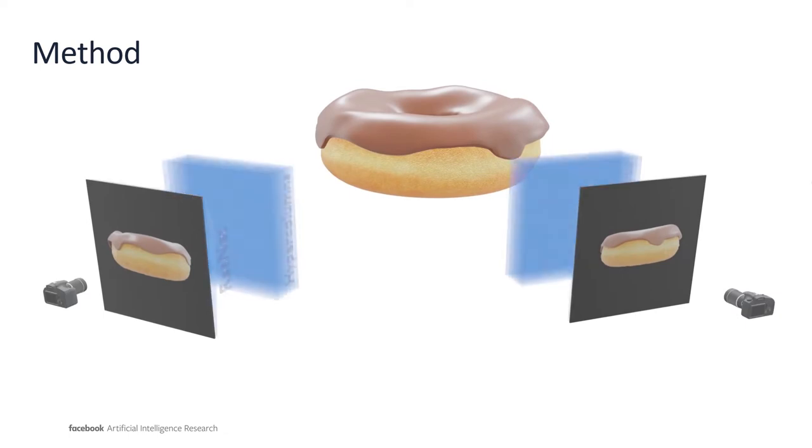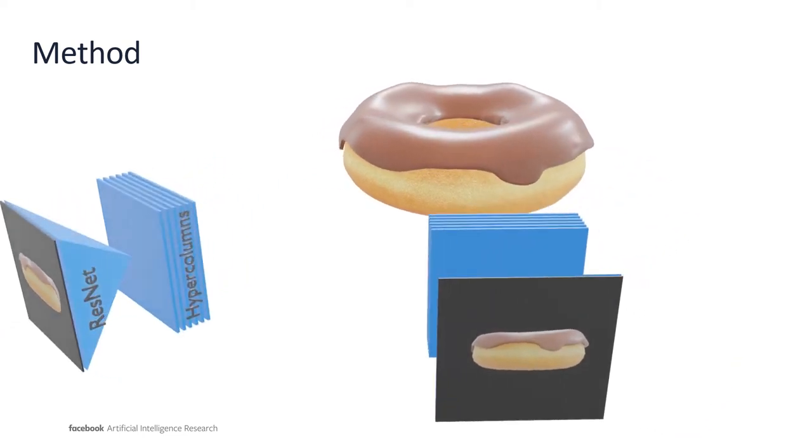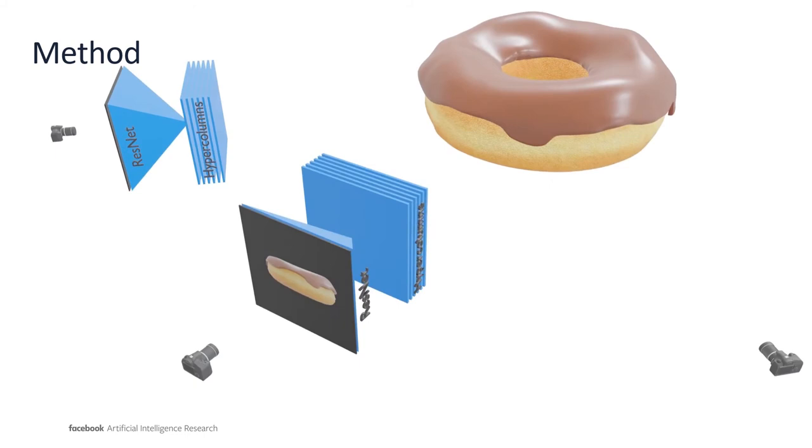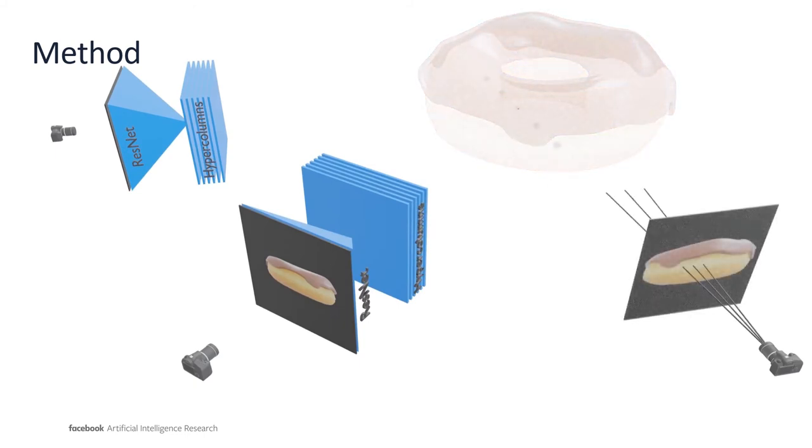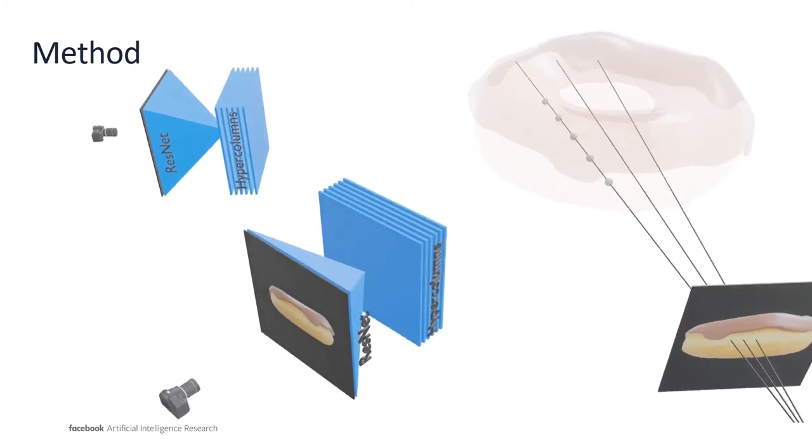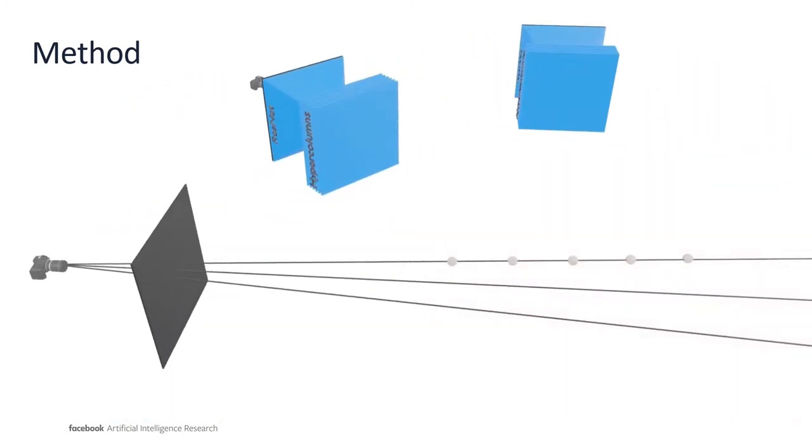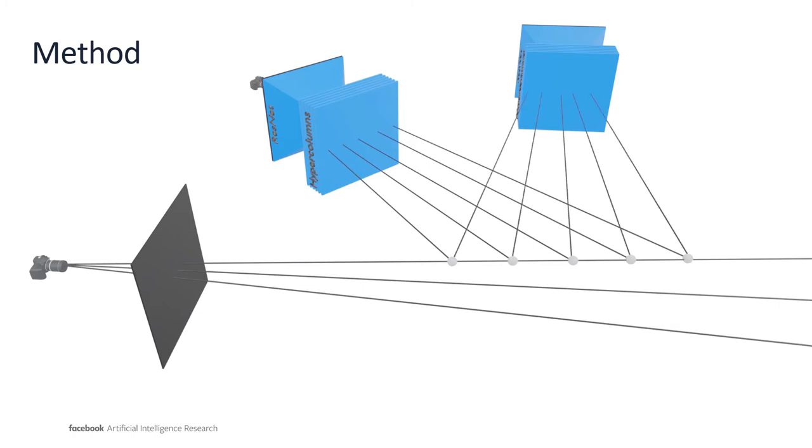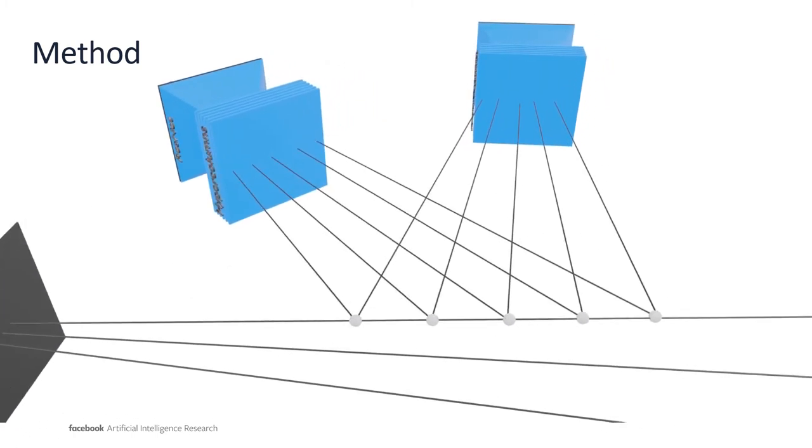First, we feed each given source image through a ResNet encoder and upsample all intermediate feature layers to the input resolution, resulting in per-pixel features. We then shoot rays from the target view through the neural radiance field and sample points along the ray. Next, we back-project each sample point into all given source views and retrieve the per-pixel features, which we refer to as warp-conditioned ray embedding.